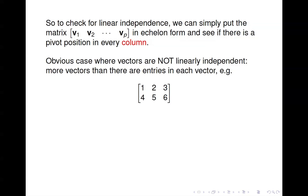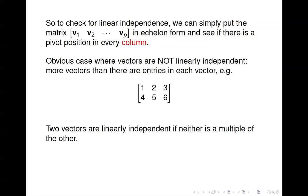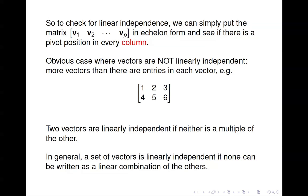There are a few obvious cases. One is where you have more vectors than entries in each vector — for example, three vectors in R2 can't be linearly independent because there's no way to have a pivot position in every column. If you have just two vectors, they're linearly independent if neither is a multiple of the other. In general, a set of vectors is linearly independent if none of the vectors can be written as a linear combination of the others.